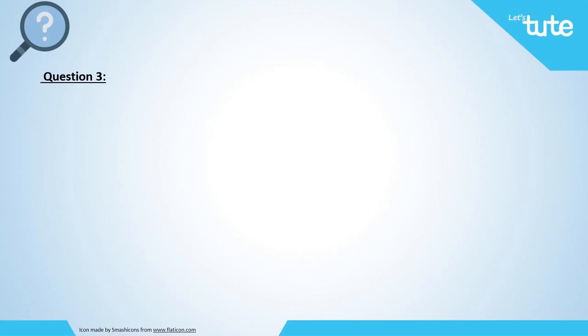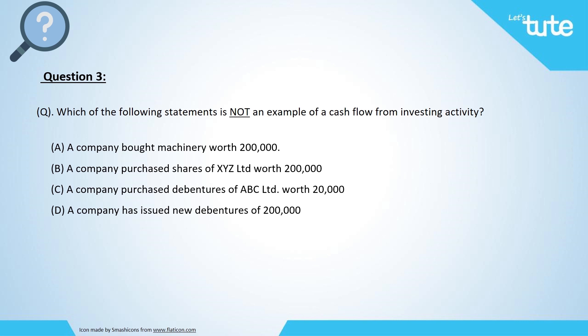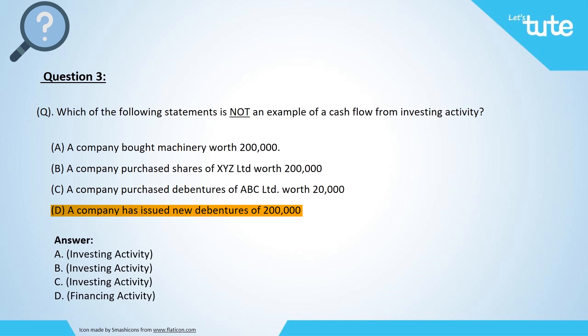Question three: Which of the following is not an example of a cash flow from investing activities? Option A: a company bought machinery worth $200,000. Option B: a company purchased shares of XYZ Limited worth $300,000. Option C: a company purchased debentures of ABC Limited worth $20,000. Or Option D: a company has issued new debentures of $200,000. The answer is Option D — a company issuing new debentures of $200,000 is an example of a financing activity. Options A, B, and C are examples of investing activities.